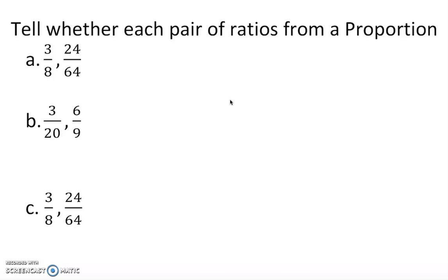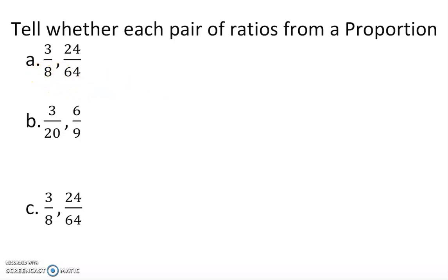We're going to use inequality signs: less than, greater than, and equal. The best and easiest way to check if two fractions are equal is to cross-multiply. You have to start with the numerator on the left — multiply that first. Or you can reduce, it's up to you. Let's analyze the first example.